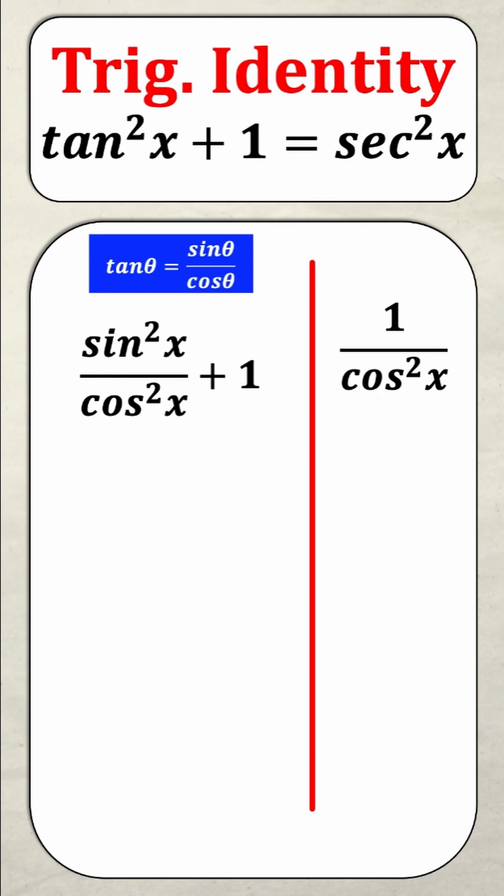But I still have these pesky ones. On the left I'm adding a one but on the right the ones in the numerator so how do I equate that?